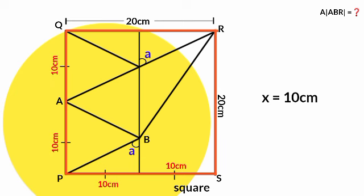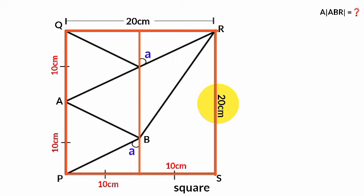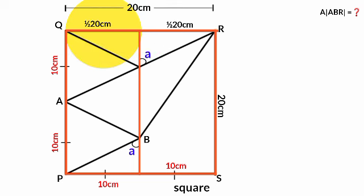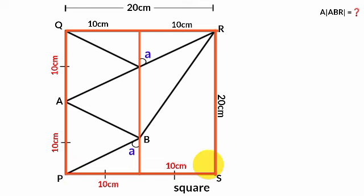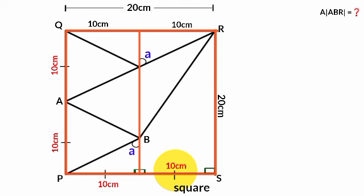Since the line is parallel to sides PQ and RS, and it bisects one side, it must also bisect the opposite side. Therefore, those segments are also half of 20 centimeters, which is 10 centimeters each. All angles of a square are right angles, and since this line is parallel to PQ while RS is perpendicular to PS, this line must also be perpendicular to both PS and QR.